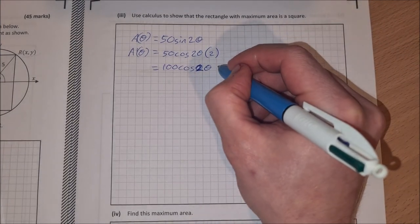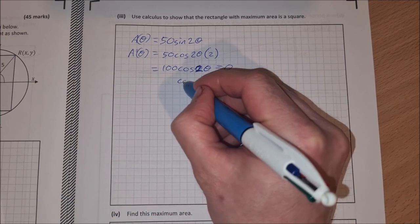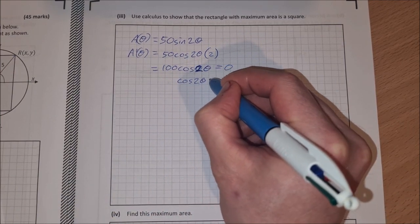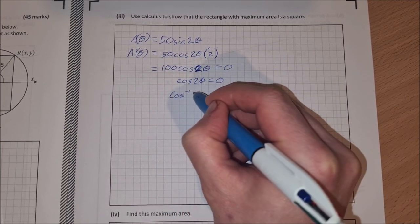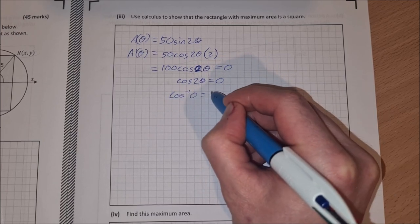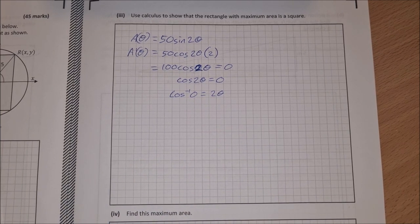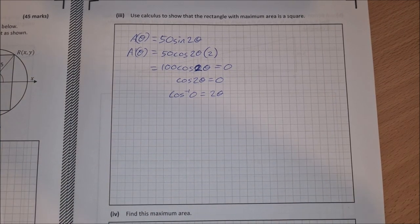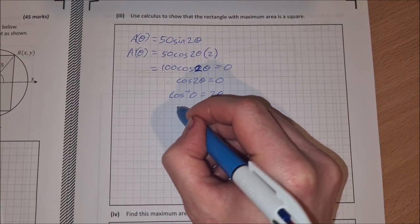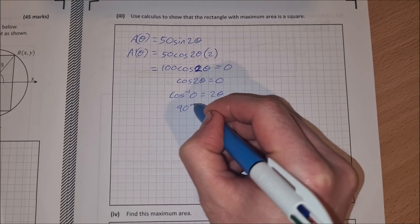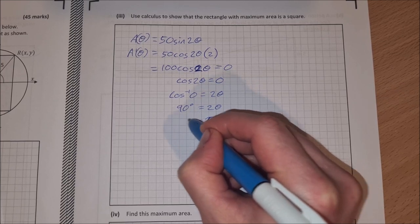Now, what we do with this is we let that equal to 0 to find the maximum area. So now I can divide across by 100 and get cosine of 2 theta is equal to 0. So then the cos inverse of 0 is equal to 2 theta. So cos inverse of 0 is 90 or pi over 2. So we'll just do it in degrees. So I have 90 degrees is equal to 2 theta. So theta is going to be equal to 45 degrees.